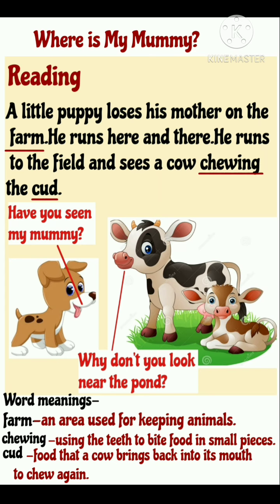एक छोटे से puppy की mummy farm पर गुम जाती है. वह उन्हें ढूंढने के लिए इधर-उधर भागता है. वह एक मैदान में पहुँचता है, वहाँ उसे एक cow जुगाली करती हुई मिलती है. जब वह cow से मिलता है तो पूछता है — Have you seen my mommy? क्या आपने मेरी mummy को देखा है? Cow ने तो उसकी mummy को देखा नहीं था, तो वह कहती है — Why don't you look near the pond? तुम उन्हें pond के पास क्यों नहीं देखते?